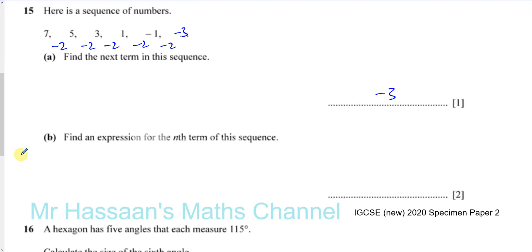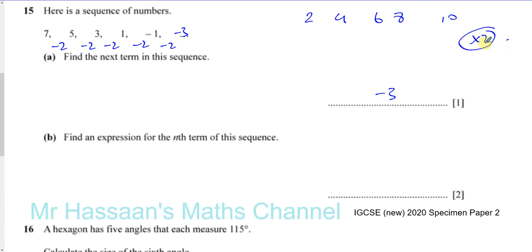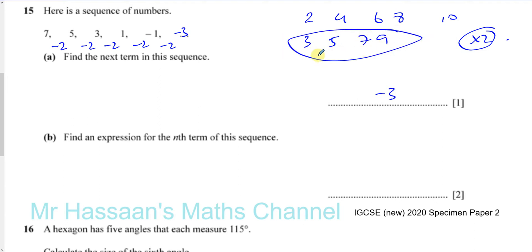So if something goes up in 2s — 2, 4, 6, 8, 10 — it's got something to do with the 2 times table. If something goes up in 2s like 3, 5, 7, 9, it's still got something to do with the 2 times table because it's going up in 2s, but you have to just adjust it.